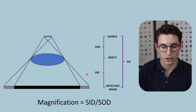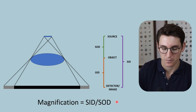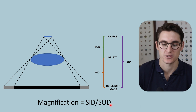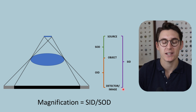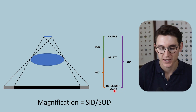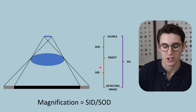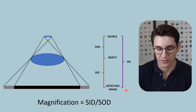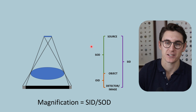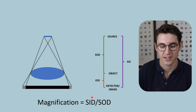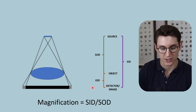When we look at magnification, we can calculate it by dividing our source to image distance over our source to object distance. So if we increase our source to image distance, we increase the magnification of our object. If we decrease the denominator — the source to object distance — we increase our magnification. Here, we've increased our source to object distance, increased our denominator, and therefore decreased the amount of magnification, which has decreased our geometric blurring.